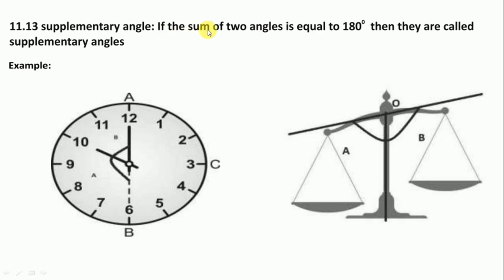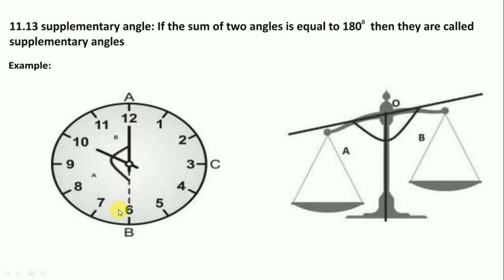Supplementary Angles: if the sum of two angles is equal to 180 degrees, then they are called supplementary angles. Two angles whose sum is 180 degrees are called supplementary. The figure shows a straight line — supplementary means 180 degrees, and 180 degrees means a straight line.